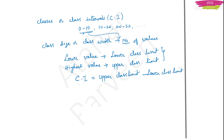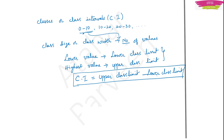This is the formula for class interval. If you want to find a class interval for given data, you find the upper class limit and the lower class limit and subtract them — upper class limit means highest value, lower class limit means lowest value. There is another term called class mark, which is the mid value of any two limits — the value that lies exactly in between the upper class limit and lower class limit.